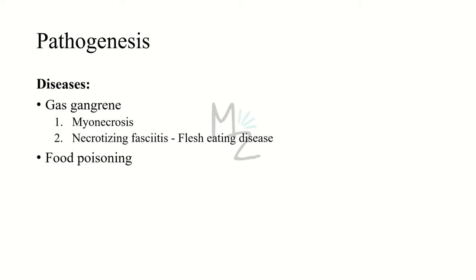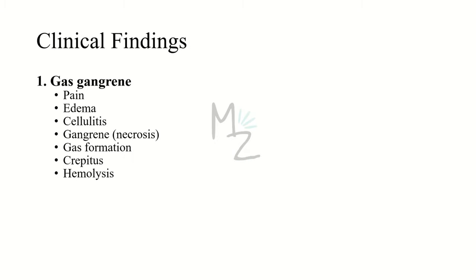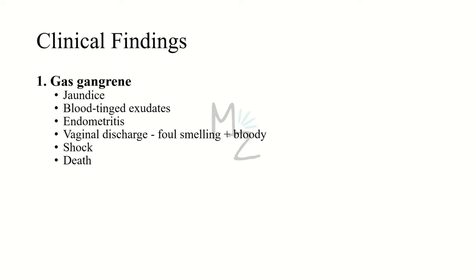Clostridium perfringens is responsible for causing gas gangrene, which includes myonecrosis — 'myo' means muscle and 'necrosis' means cell death, so it refers to cell death in the muscles. Necrotizing fasciitis is often termed the flesh-eating bacteria disease. Clinical findings for gas gangrene include pain, edema, cellulitis, and gangrene, with necrosis occurring in the wound area. If crepitus is palpated in affected tissue, it indicates gas — typically hydrogen produced by anaerobic bacteria. Hemolysis and jaundice are common, as are blood-tinged exudates. A foul-smelling, bloody vaginal discharge can also occur in endometritis. Shock and death can occur due to myonecrosis and necrotizing fasciitis, with really high mortality rates.